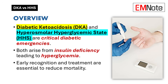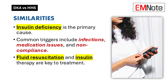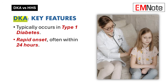Let's start with the common ground. Both DKA and HHS stem from insulin deficiency, leading to hyperglycemia. Common triggers include infection and medication non-compliance, which can set off either condition — and that's why early recognition is so important. When it comes to initial treatment, the key is fluid resuscitation and insulin therapy, which are crucial for both DKA and HHS.